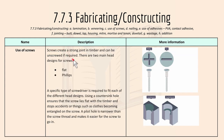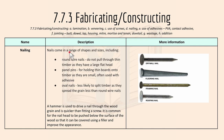For use of screws: screws create a strong joint in timber and can be unscrewed if required. There are two main head designs for screws — flat and Phillips. A specific type of screwdriver is required to fit each of the different head designs, using a countersink hole or a counterbore. For nailing: nails come in different shapes and sizes — round wire nails, panel pins, and oval nails. Round wire nails do not pull through thin timber as they have a large flat head. Panel pins are for holding thin boards onto timber as they are small, often used with adhesive. Oval nails are less likely to split timber as they spread the grain less than round wire nails. A hammer is used to drive the nails through the wood grain and it's quicker than fitting a screw.